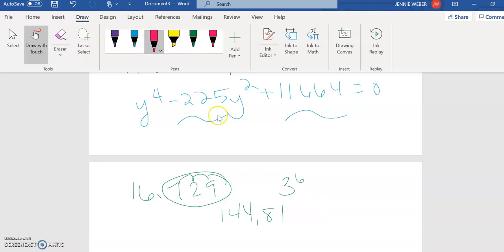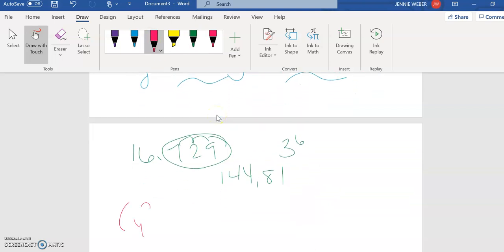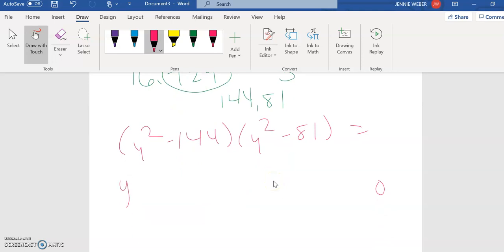so I'm going to then factor this. This is y squared minus 144 times y squared minus 81 equals 0. Okay, then I'm going to solve each one of these. Y squared equals 144 equals 0. Y squared minus 81 equals 0. So y equals plus or minus 12. Y equals plus or minus 9.